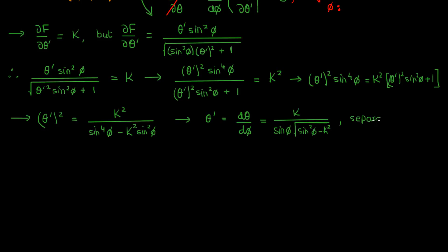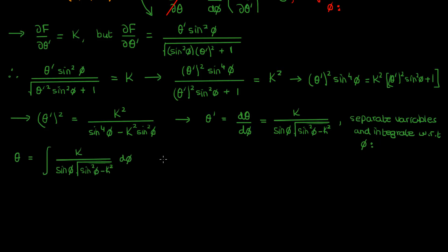Let's separate variables and integrate this differential equation with respect to phi. On the left we'll just have theta, and on the right we'll have the integral of this expression in phi. There's an important fact to note here, which is that the constant k is less than 1. Because if its magnitude were greater than 1, sine squared can't go above 1, so this square root would be imaginary. Since the derivative must be real, it can't be imaginary over some part of the domain. So that's why k has to be less than 1 — the square root has to stay real.